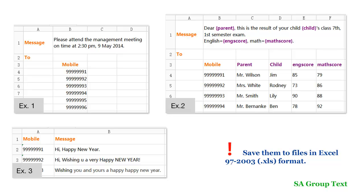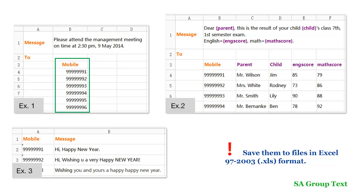There are three keywords you are going to use in your Excel: Message, To, and Mobile, which are highlighted in orange. Looking at the first example, if each recipient receives exactly the same content, you could use this template. Fill your message content here, and under the Mobile column, fill in all recipients' phone numbers.